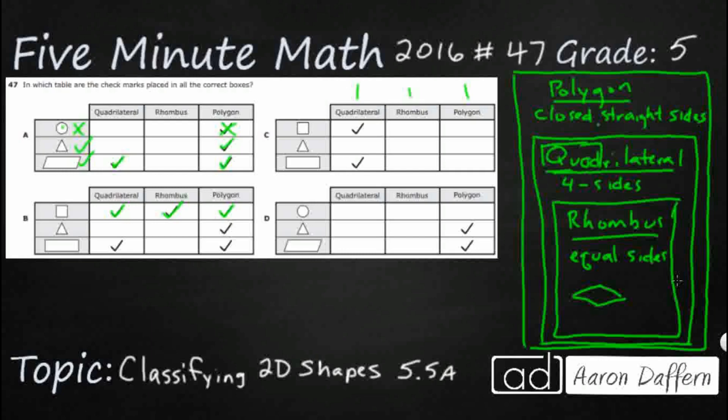Let's see what's going on with C. Well, C, that square should be a polygon. So that's automatically wrong. And so should the triangle. That's automatically wrong and so should the rectangle. So C is just not working. A is not working. Let's check D.